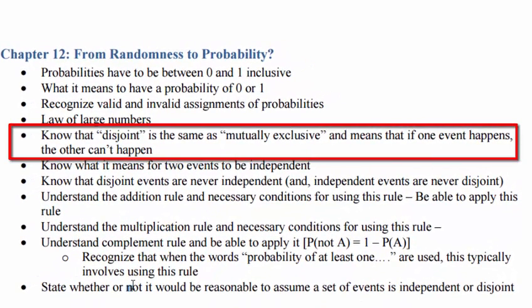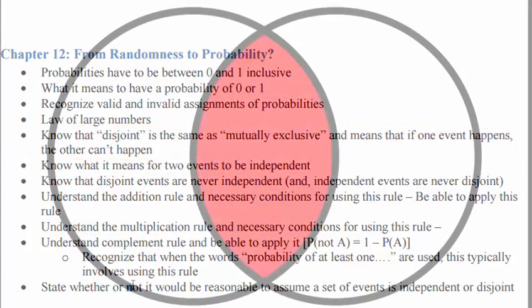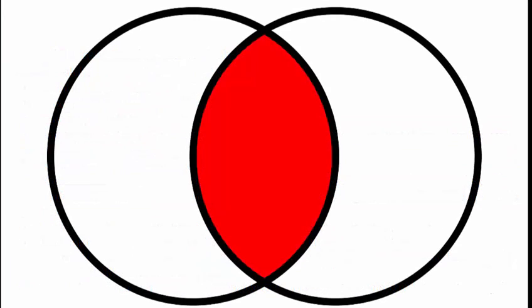Disjoint and mutually exclusive mean the exact same thing. I like to think of two circles that are joined together — if A happens, B could also happen. For example, the Red Sox winning tonight and the Celtics winning tonight: those events are not disjoint, they could both happen.